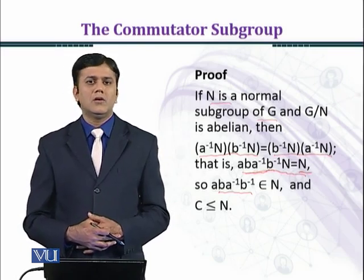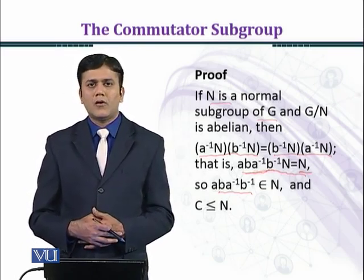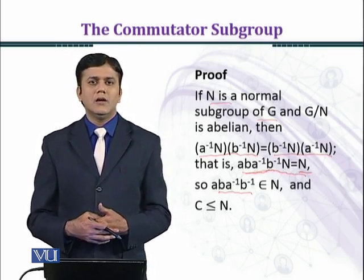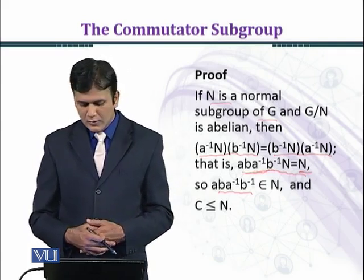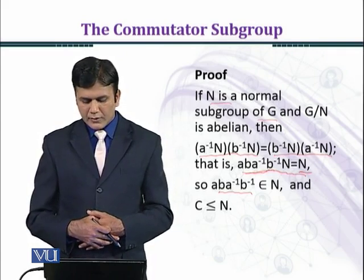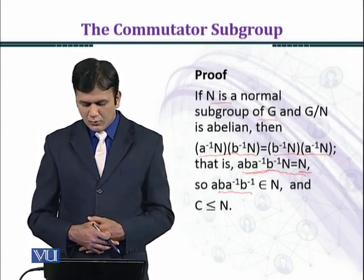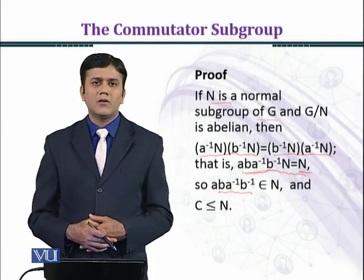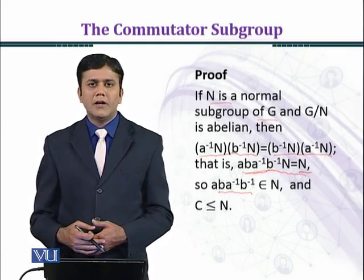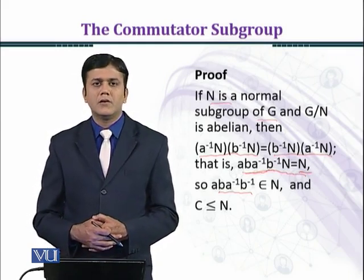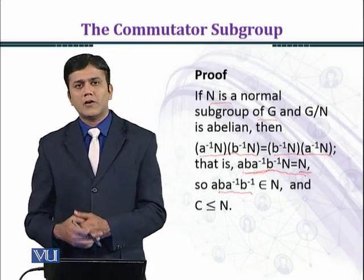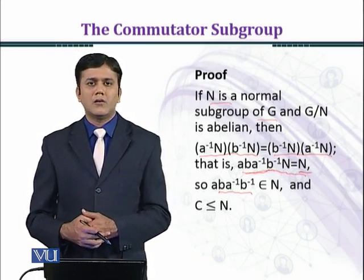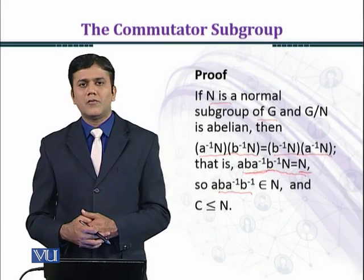Since aba⁻¹b⁻¹ is a commutator, it belongs to C, the set of all commutators, which is the commutator subgroup of G. This also means it belongs to N. So every commutator aba⁻¹b⁻¹, which is an arbitrary element of C, also belongs to N. Therefore C is a subgroup of N.